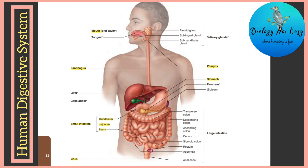The small intestine leads to an inverted U-shaped structure called the large intestine. It is termed 'large' because it is wider compared to the small intestine, and the small intestine is named 'small' because it is narrower. The large intestine has different parts, beginning with a blind sac-like portion called the cecum, followed by the ascending colon.